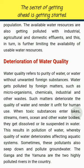Deterioration of Water Quality: Water quality refers to the purity of water — water without unwanted foreign substances. Water gets polluted by foreign matter such as microorganisms, chemicals, industrial and other wastes. Such matter deteriorates the quality of water and renders it unfit for human use. When toxic substances enter lakes, streams, rivers, oceans and other water bodies, they get dissolved or lie suspended in water, resulting in pollution that affects aquatic systems. Sometimes these pollutants also seep down and pollute groundwater. The Ganga and the Yamuna are the two highly polluted rivers in the country.